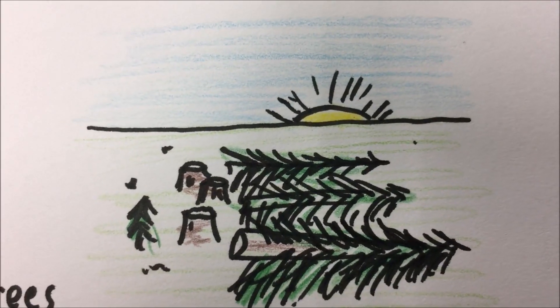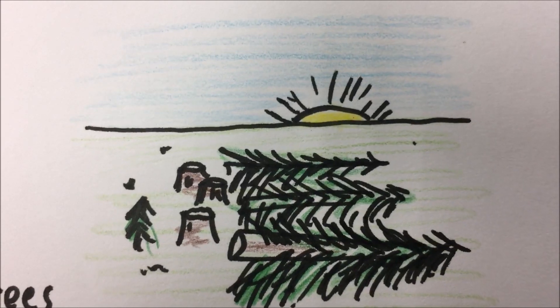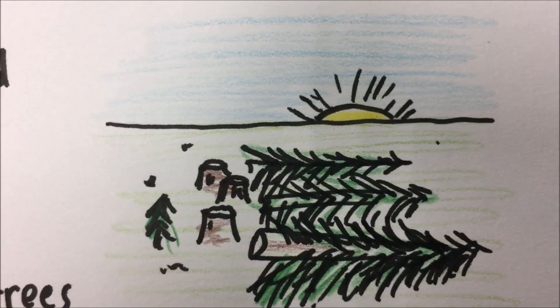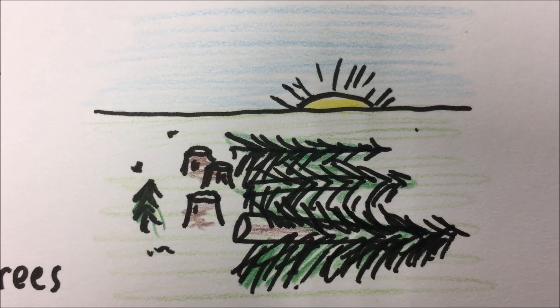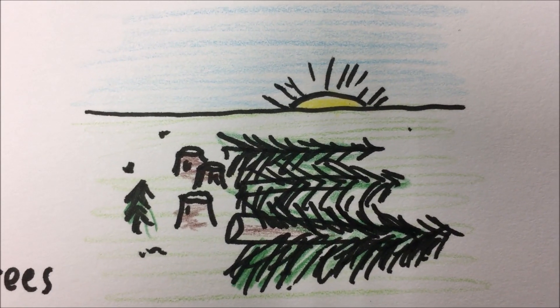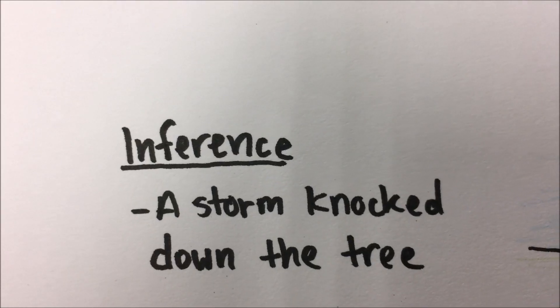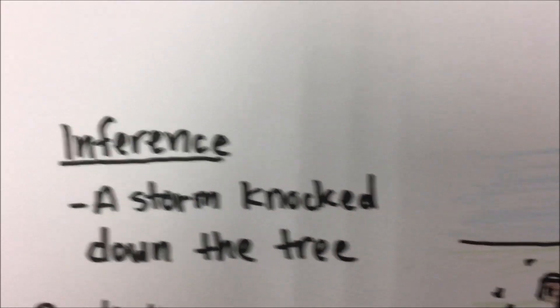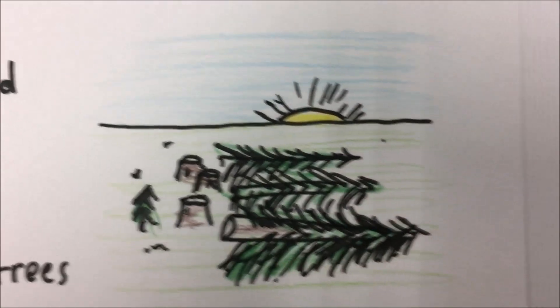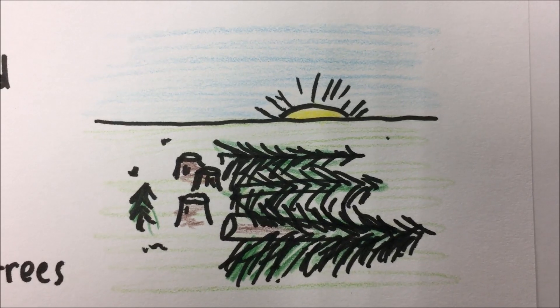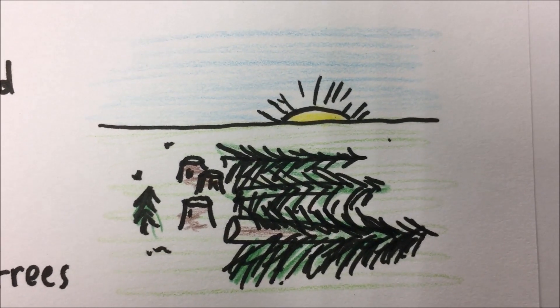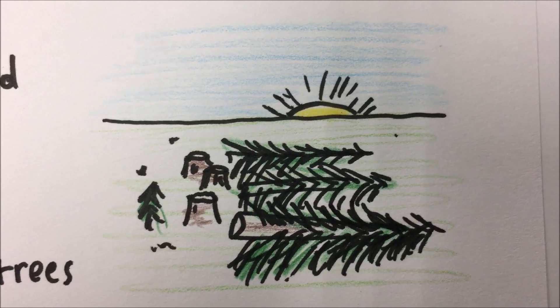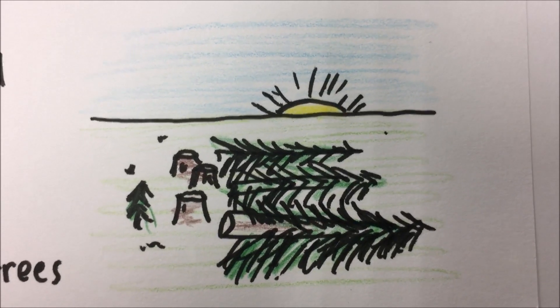In this picture we can say the sun is rising or setting, the trees are on their side, and there are stumps there. Now based on our observations we can make an inference — in this case, that a storm knocked down the trees. An inference is based on our observations; it is a guess as to what has happened or what is happening. In this case we believe the trees have been knocked down by the wind.